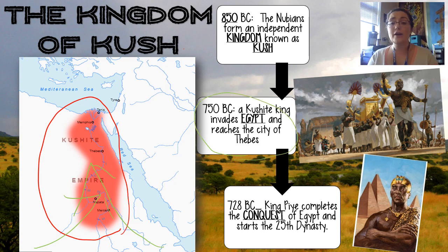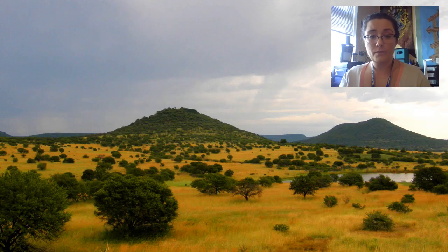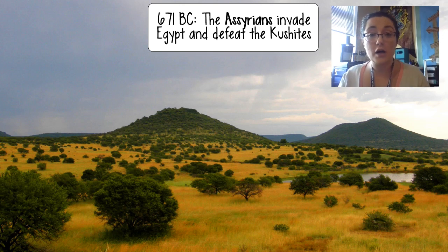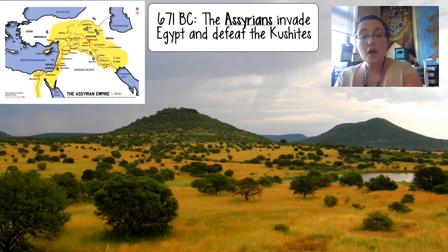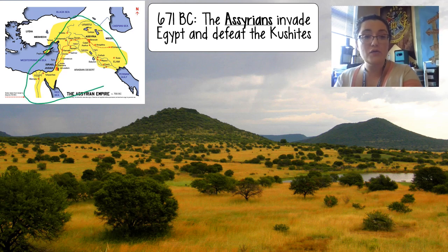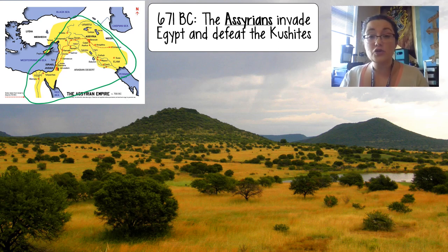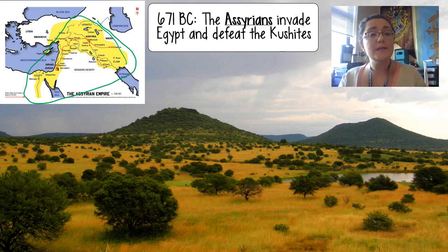In 671 BC, unfortunately this Cushite kingdom didn't last long — the Assyrians invaded Egypt. We talked about the Assyrians when we discussed Mesopotamia because they built a huge empire. They came over with strong, powerful weapons and chariots and defeated the Cushites. Now Egypt and Nubia were under the control of a group from Mesopotamia.